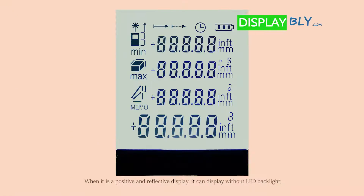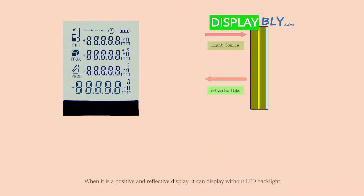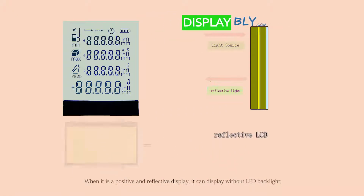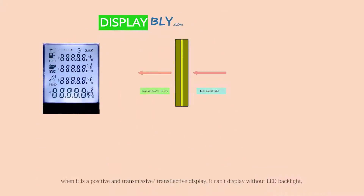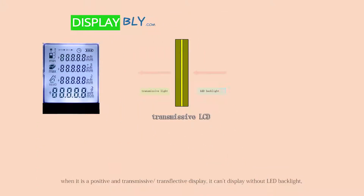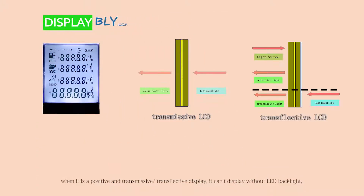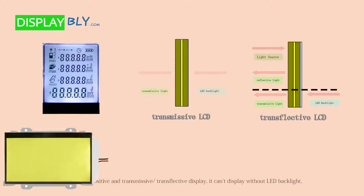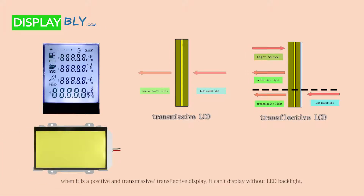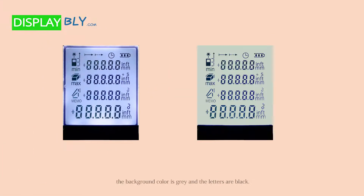When it is a positive and reflective display, it can display without LED backlight. When it is a positive and transmissive or transflective display, it cannot display without LED backlight. The background color is gray and the letters are black.